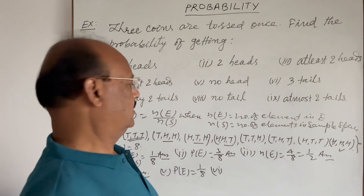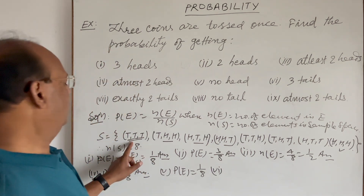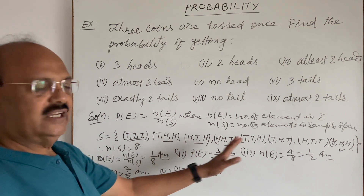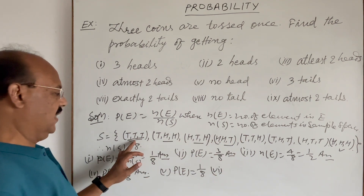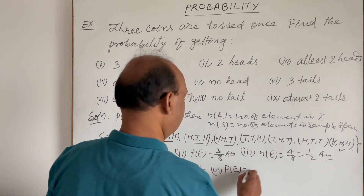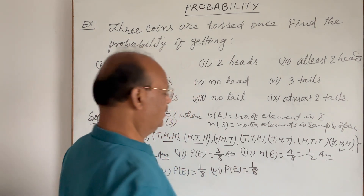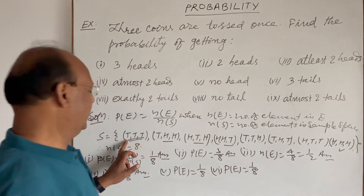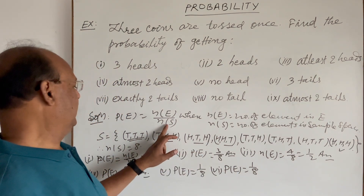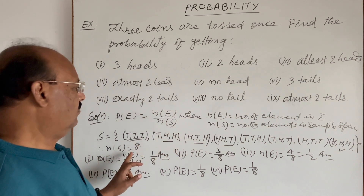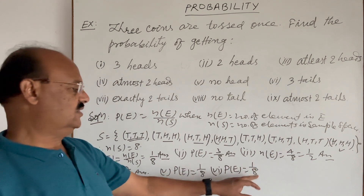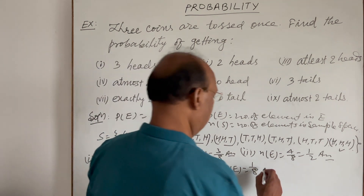Sixth part: three tails. Again there is only one element having three tails — T T T — and no other element has three tails. So n(E) is 1 and n(S) is 8, giving a probability of 1/8.